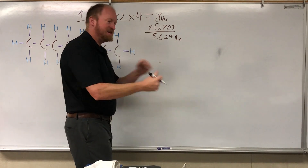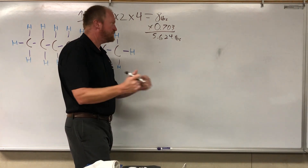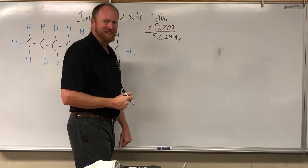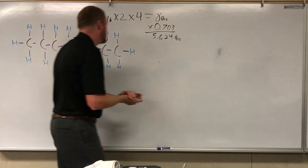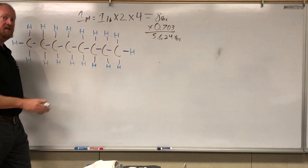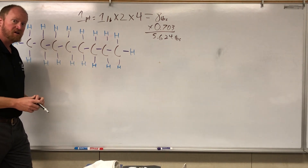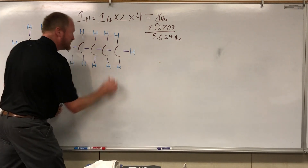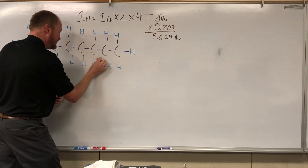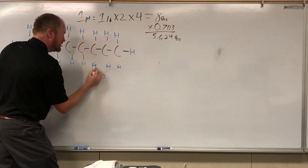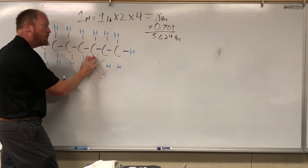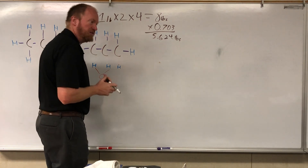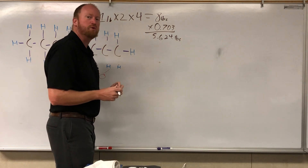Now you might say: great, I burn a gallon of gasoline and I produce 5.624 pounds of carbon dioxide. No, you don't — and here's why. Gasoline isn't all carbon. It's got a lot of carbon; carbon is certainly the bulk of the weight. But there's also hydrogen, and when you burn hydrogen it does not produce carbon dioxide — it produces water, H2O. In fact, most of the molecules produced by burning gasoline are water. Carbon dioxide is a minority of the molecules you're producing, but they're important, so we're going to focus on them.